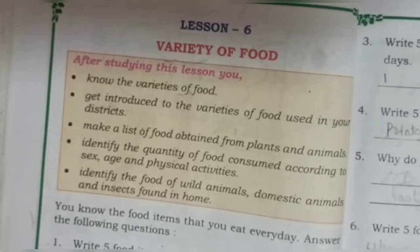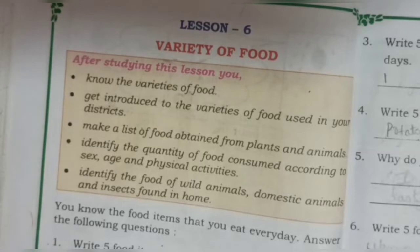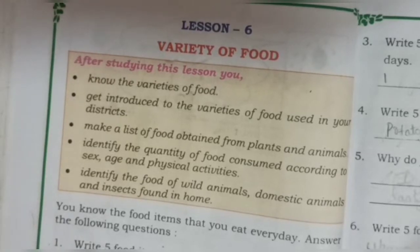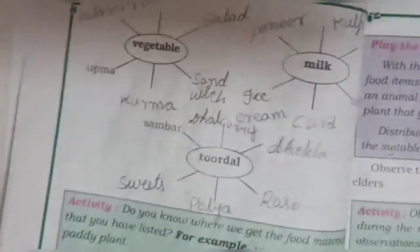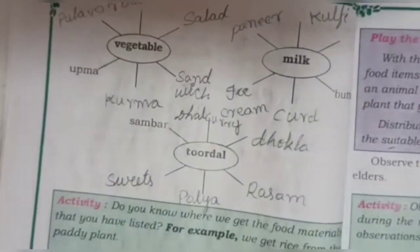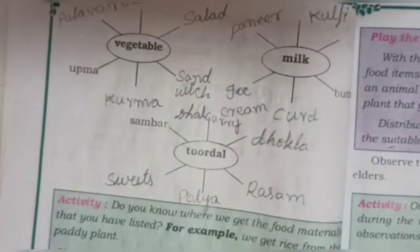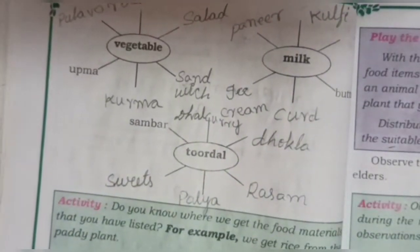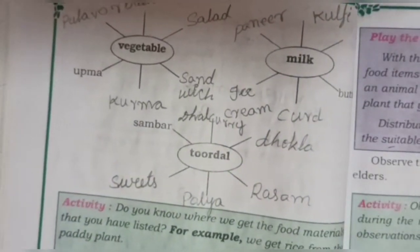Hi children! Let us continue the 6th lesson: Variety of Food. In the last class we completed activities. Let us continue the activities.